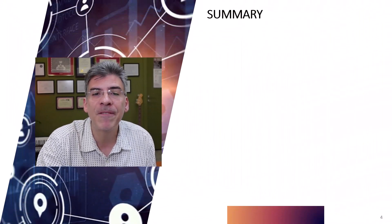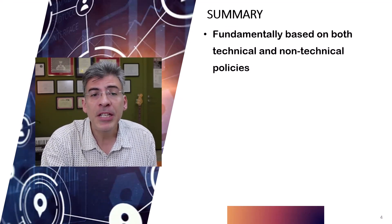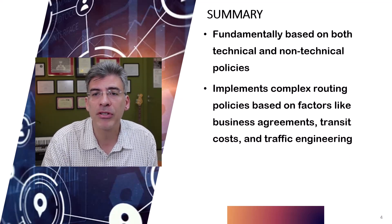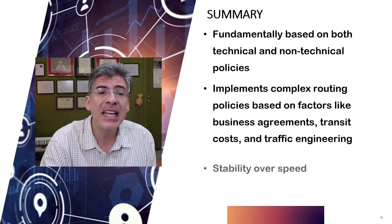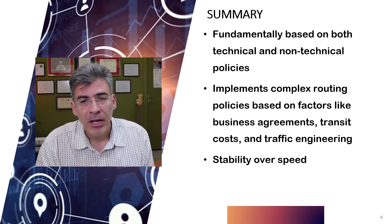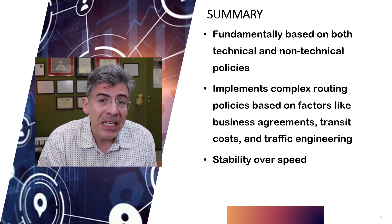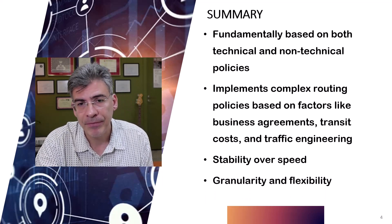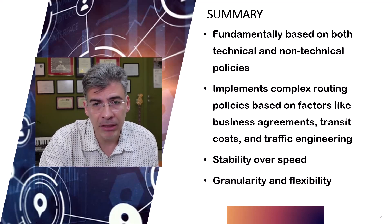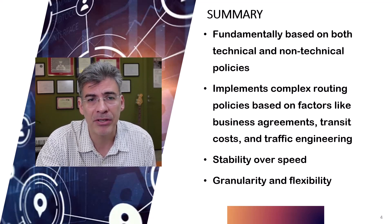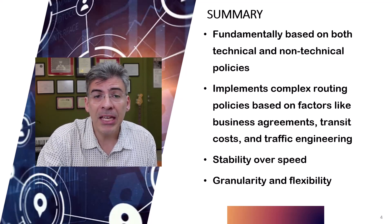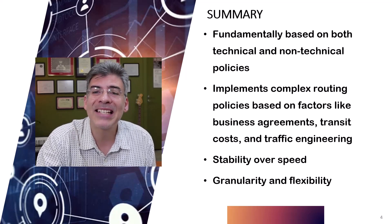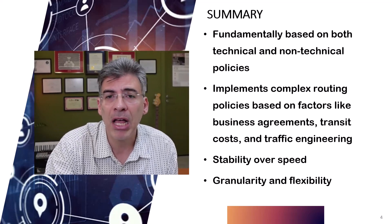To summarize: BGP routing is fundamentally based on both technical and non-technical policies. BGP is designed to implement complex routing policies based on factors like business agreements, transit costs, and traffic engineering. BGP is also more concerned with stability over speed—rapid changes in the global internet routing table can lead to instability, so BGP has mechanisms to dampen frequent route changes. BGP also focuses on granularity and flexibility, providing the ability to make routing decisions based on many criteria, including prefix length, influencing inbound or outbound traffic patterns, and selecting different paths for different prefixes. Given BGP's role in managing the global internet routing table, its design has naturally evolved to be more complex and flexible than conventional IGPs, allowing it to handle the nuances of inter-AS routing at a scale IGPs are simply not designed for.